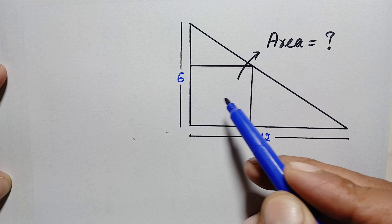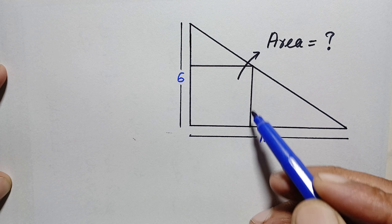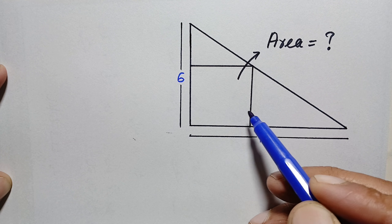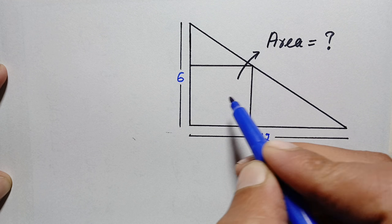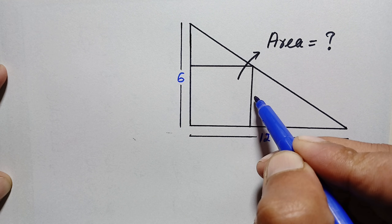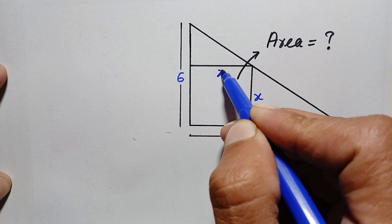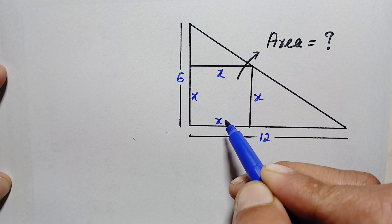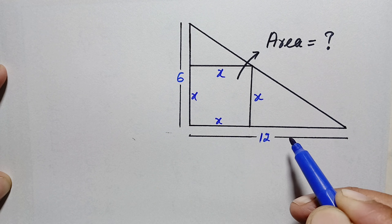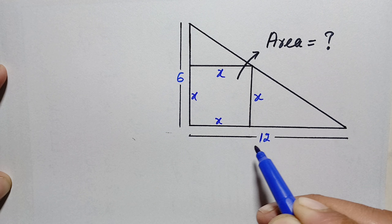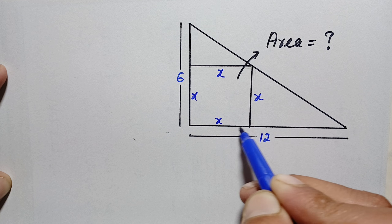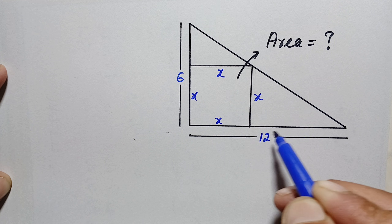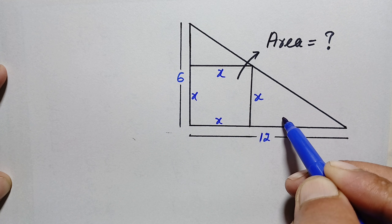To find the area of the square, we need the length of one side. Suppose each side of this square is equal to x. Now look at the base of this triangle — the base is 12 units, and this length is x units, so the remaining length will be 12 minus x units.